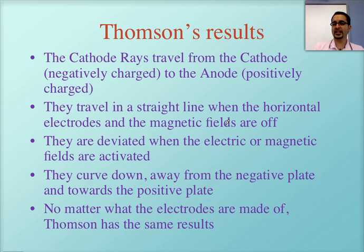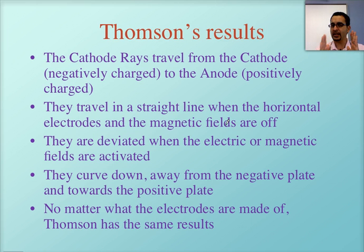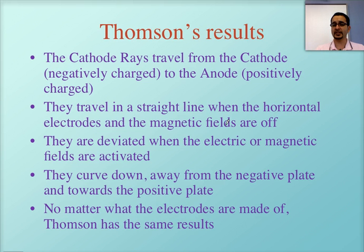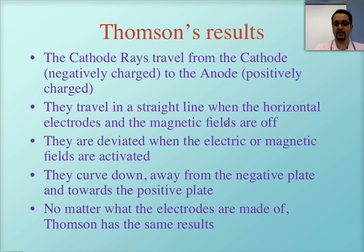One additional thing Thomson did was to test whether the rays behaved differently depending on what material the electrodes were made from. He made them out of gold, silver, iron, and even graphite. No matter what material he used, he got exactly the same results.